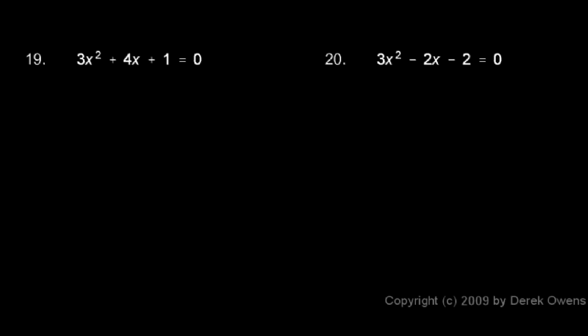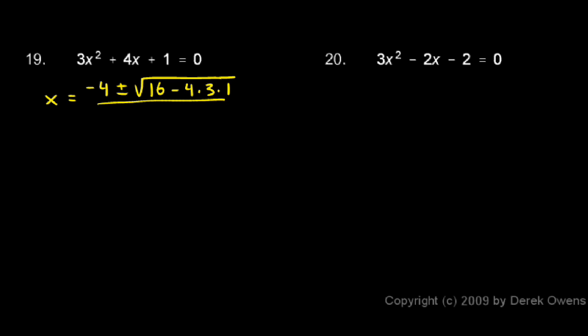Number 19: 3x squared plus 4x plus 1. x equals negative b, which will be negative 4, plus or minus the square root of b squared, which is 16, minus 4 times a, which is 3, times c, which is 1, all over 2a, which is 2 times 3.